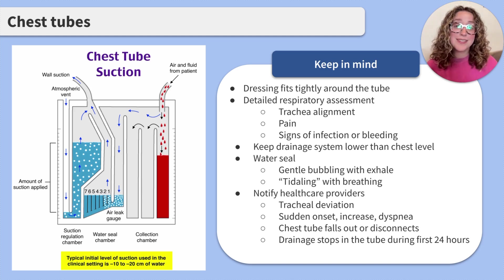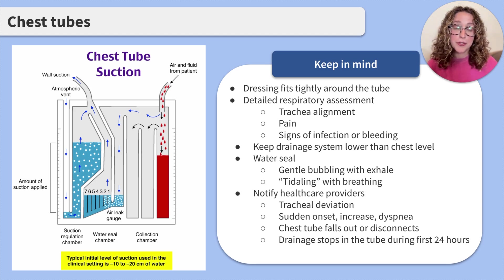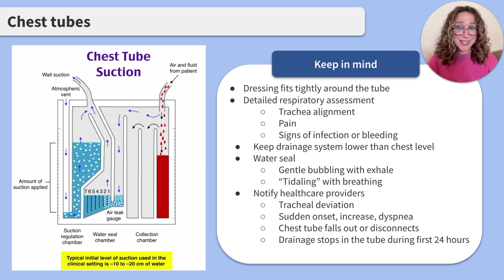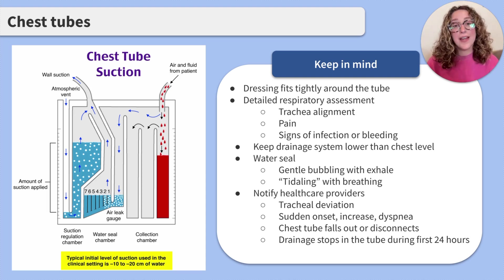If the chest tube gets disconnected from the drainage system, you'll want to place the end of the tube in a container of sterile water. And as a worst case scenario, if the chest tube falls out, you're going to want to cover that area with a dry, sterile gauze.